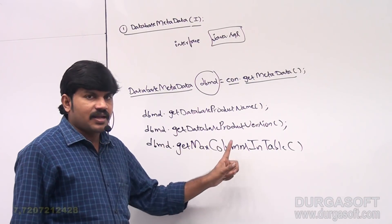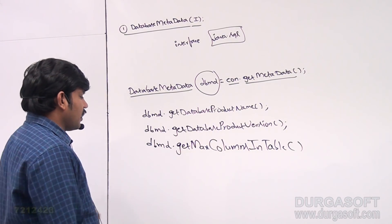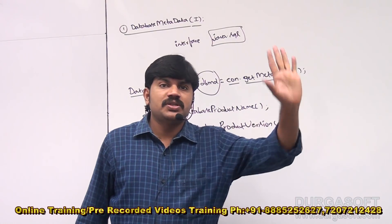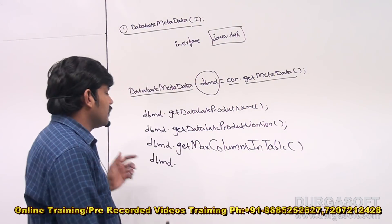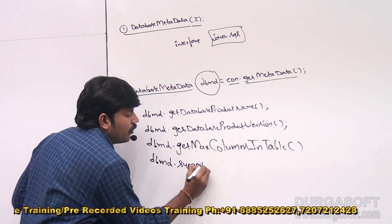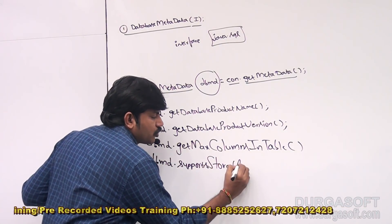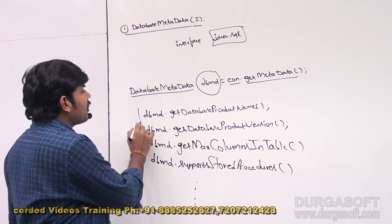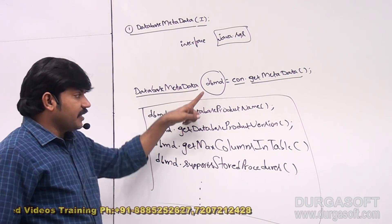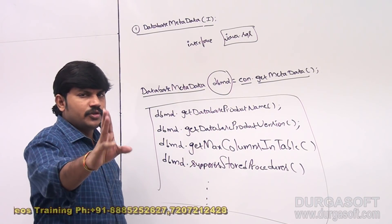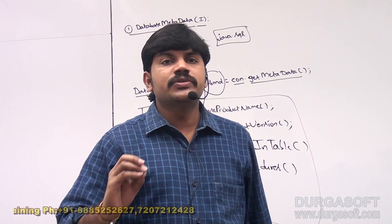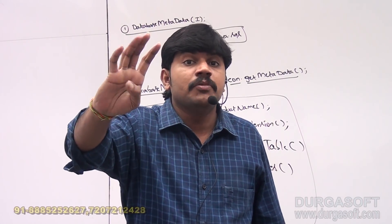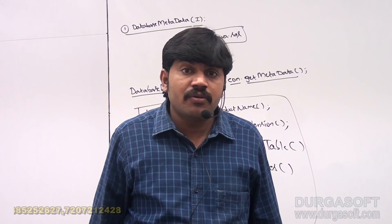To check whether the database supports stored procedures or not, we call dbmd.supportsStoredProcedures(). Like this, any number of methods can be called on the DatabaseMetaData object to get complete information about the database — product name, version, max columns, total tables, and more.